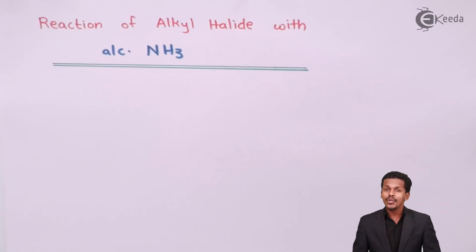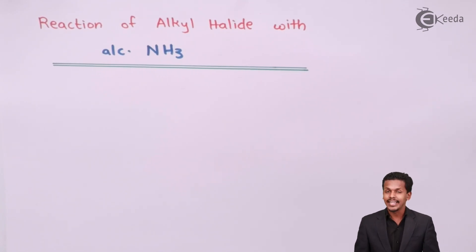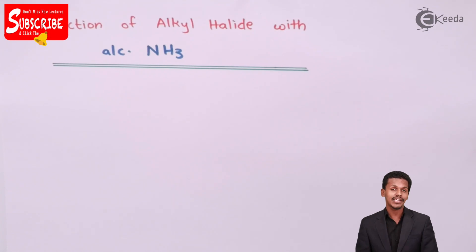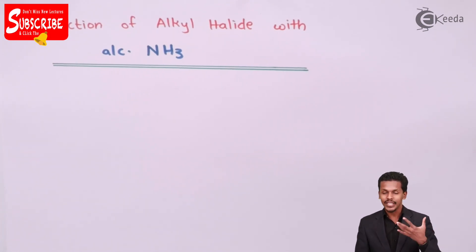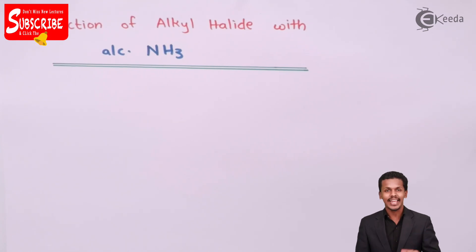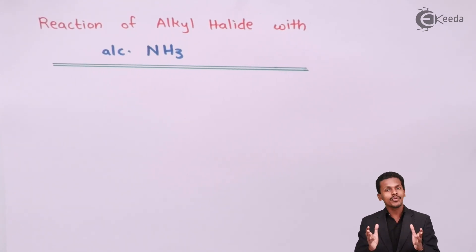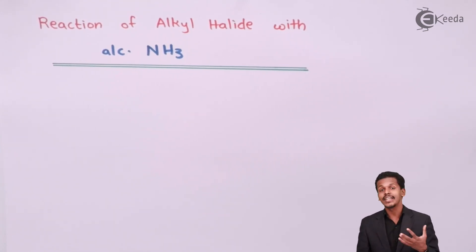The reaction of alcoholic ammonia with alkyl halide is basically a substitution reaction, and this substitution reaction can take place until all the hydrogen atoms of ammonia are replaced by a particular alkyl group. This process is known as ammonolysis, or basically Hoffman's ammonolysis.